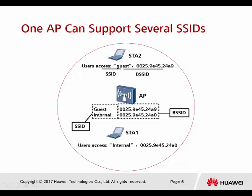Every single SSID will be paired with a BSSID. The BSSID is also known as the MAC address of the AP. So right now we have a guest SSID and an internal SSID. How do we know these two SSIDs come from the same AP? We can look at the MAC address — the BSSID. Notice the hex values are mostly the same, with only the last number different, because every SSID needs its own unique BSSID.